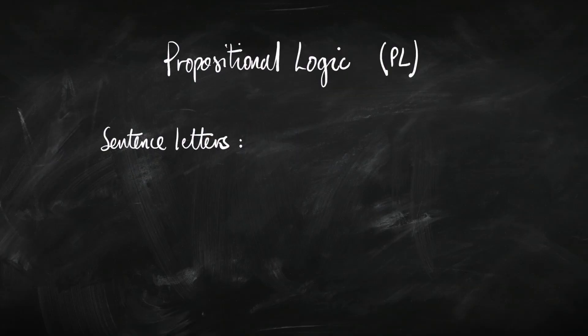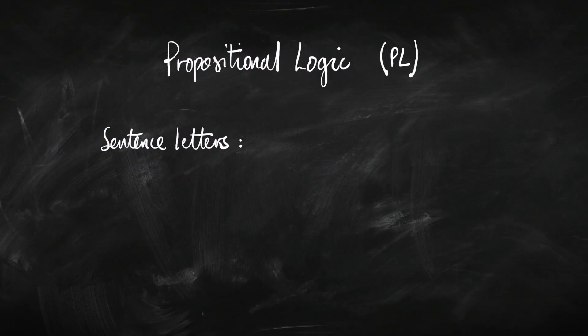The language of propositional logic starts with some sentence letters. As I mentioned in the last video, logic is content neutral — we don't deal in English sentences, we deal with sentence letters. Let's call those P, Q, and R. If we need more, we can go P1, P2, P3. Different logicians call these different things — sometimes atoms, atomic sentences, sentence variables, or primitive propositions — but we're going to call them sentence letters.